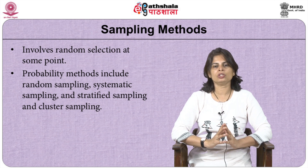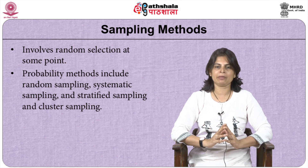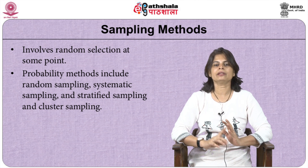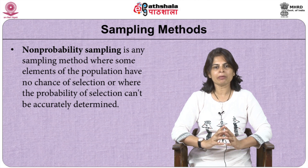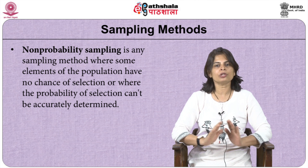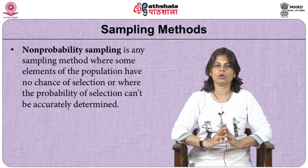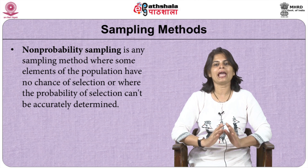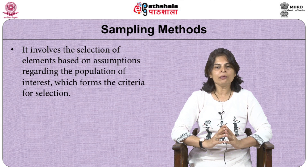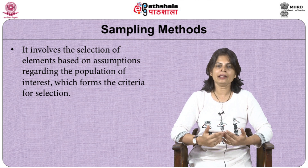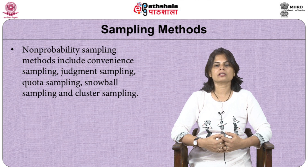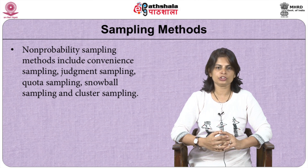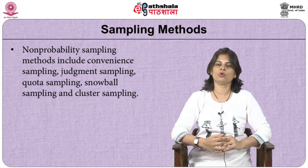Probability sampling involves random selection at some point. Probability sampling methods include random sampling, systematic sampling, stratified sampling, and cluster sampling. Non-probability sampling is a method where some elements of the population have absolutely no chance of being selected, or where the probability of selection cannot be accurately predetermined. It involves selection based on assumptions regarding the population of interest. Non-probability sampling methods include convenience sampling, judgment sampling, quota sampling, and snowball sampling.